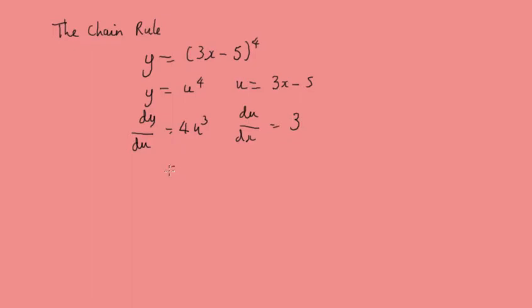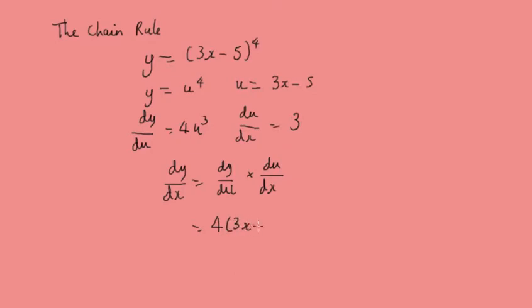That gives us dy by dx equals dy by du times du by dx, which is 4. Instead of writing u, we put back in our function that we called u: (3x minus 5) to the power 3, times du by dx, which was 3.